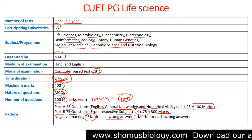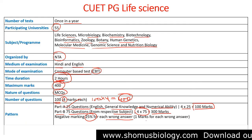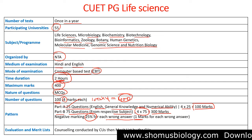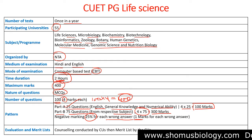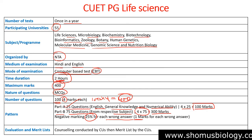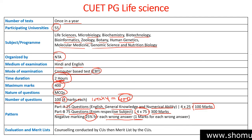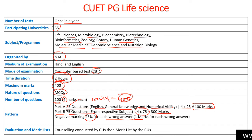For each wrong answer, marks will be deducted. After you qualify CUET PG, a merit list will be produced based on your exam score. Based on this merit list, counseling will be conducted by different universities, and then the selection process will be completed. That is how CUET PG works.